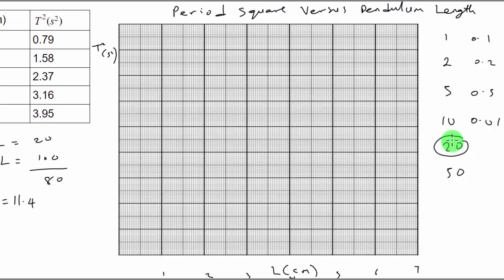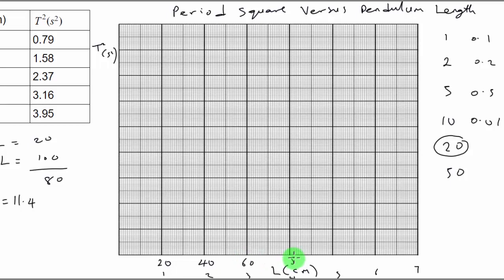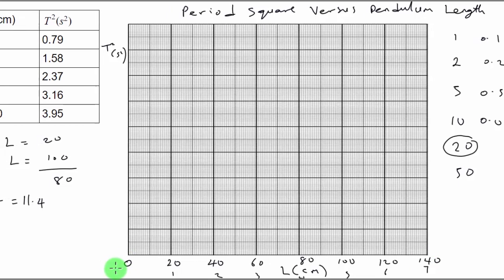Now let's label the x-axis using a scale of 20. We label each major block: 0, 20, 40, 60, 80, 100, 120, 140. Now we've figured out the scale of the x-axis.